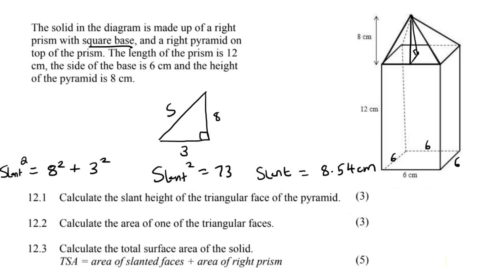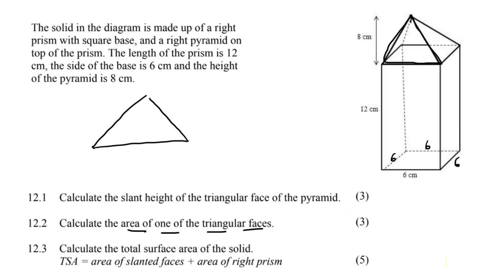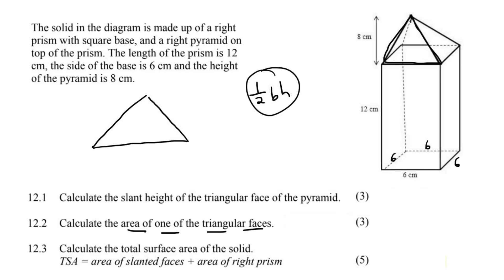Now it says: calculate the area of one of the triangular faces. It's not a 90 degree triangle. Some learners think they have to draw a line down, make a 90 degree angle, and then work out the area of both triangles — but that's not necessary.